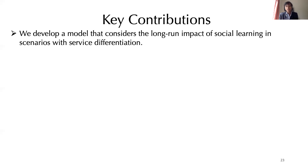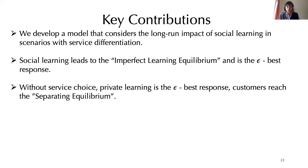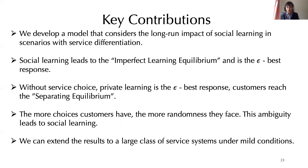We have developed a model that considers the long-run impact of social learning where customers have service differentiation. Social learning leads to the imperfect learning equilibrium and is the epsilon best response. Without service choice, private learning emerges as an epsilon best response and customers reach a separating equilibrium. The more choices customers have, the more randomness they face — the resulting ambiguity leads to social learning, even though as a consequence, customers do not learn the true service quality, neither do they reach a consensus with their peers. Thank you very much for your attention, and have a good day.